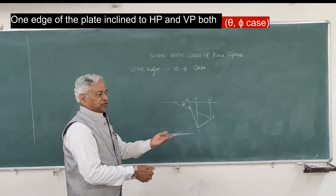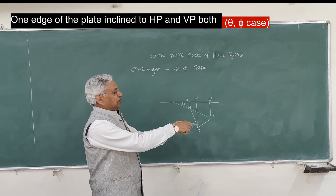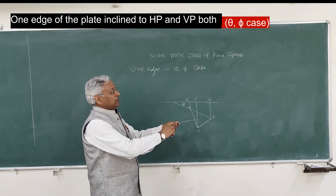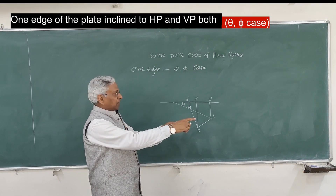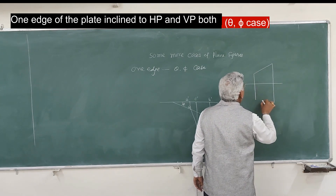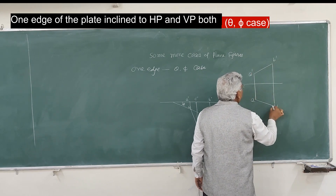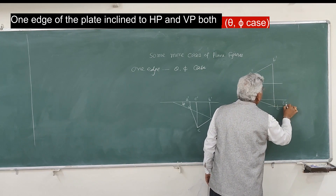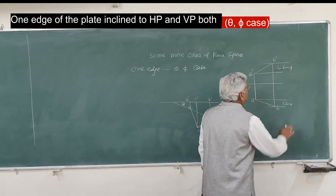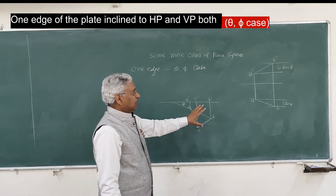The plate is kept so that this edge is inclined to the vertical plane. Now give this angle theta to this line. If you remember the projection of a line — when a line is inclined to both the horizontal and vertical plane — there is a plan difference and an elevation difference between the ends of the projection.